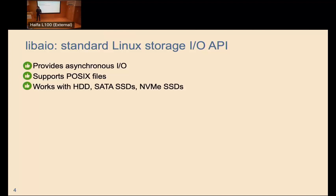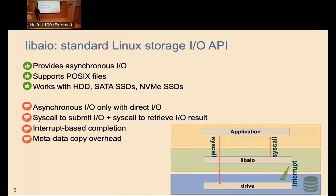LibAIO supports POSIX files and file systems and works with a wide array of storage devices. However, it has drawbacks: asynchronous IO only works for direct-access IO, so if you use buffered access, you end up with a blocking version of LibAIO. The main limitation is performance — LibAIO uses one system call to submit an IO request and one system call to retrieve a completed IO, and it relies on interrupts to be notified when a request has completed.